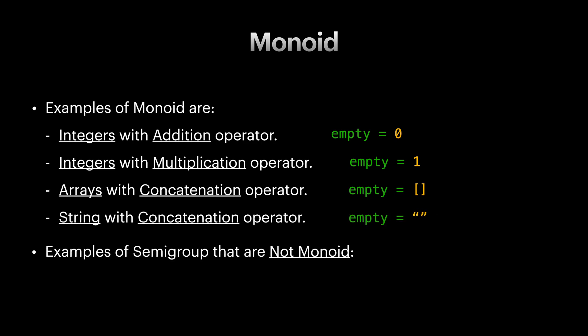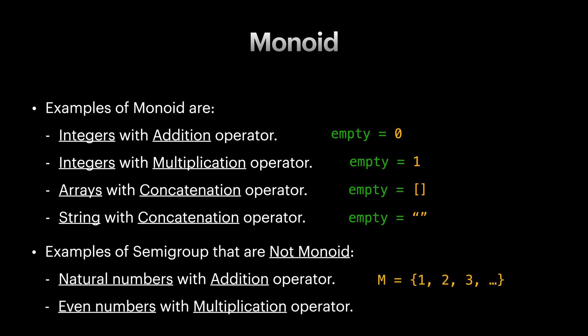Examples of semigroups that are not monoid can be natural numbers with addition and even numbers with multiplication.